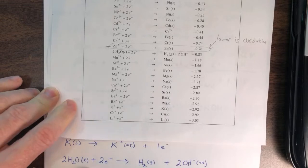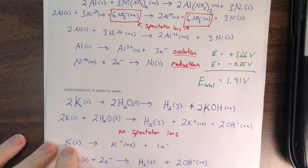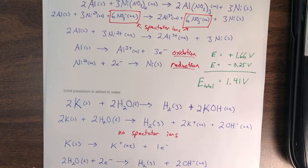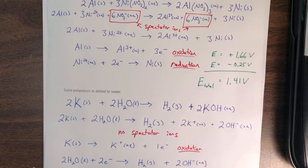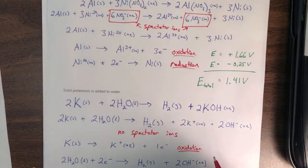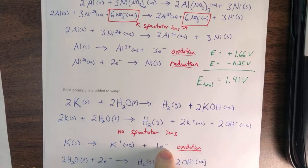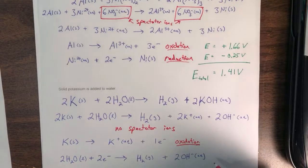Which one's oxidation, which one's reduction? The potassium is losing an electron — losing electrons is oxidation. LEO says GER. So this is oxidation. Water here is gaining two electrons, and because water is gaining two electrons, this is going to be reduction.